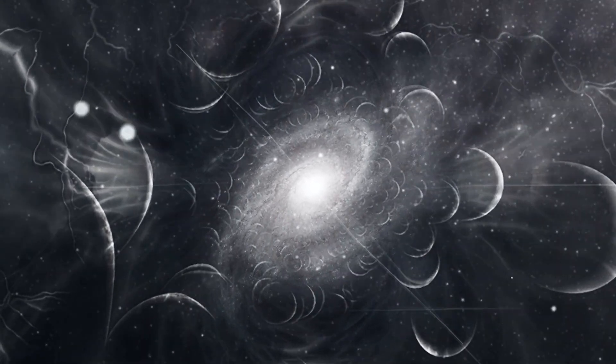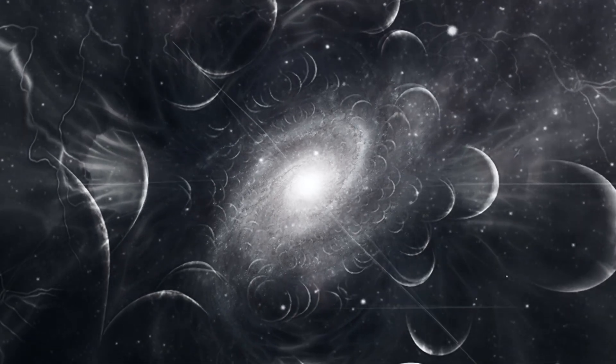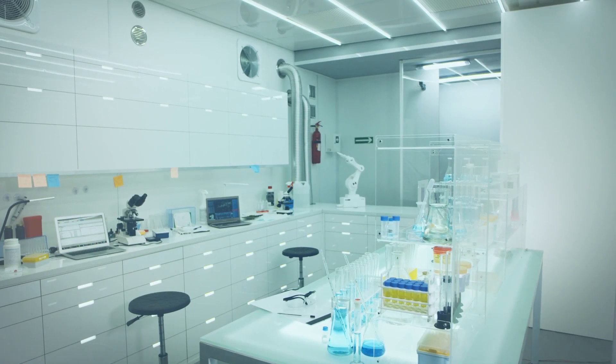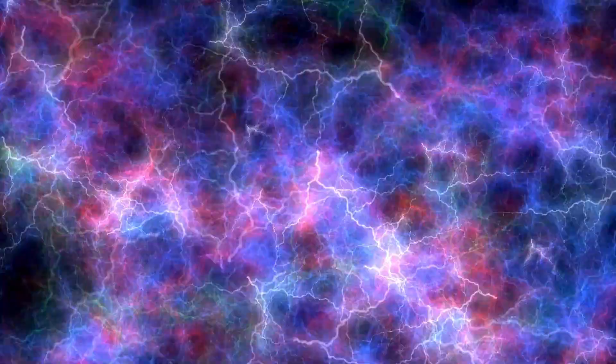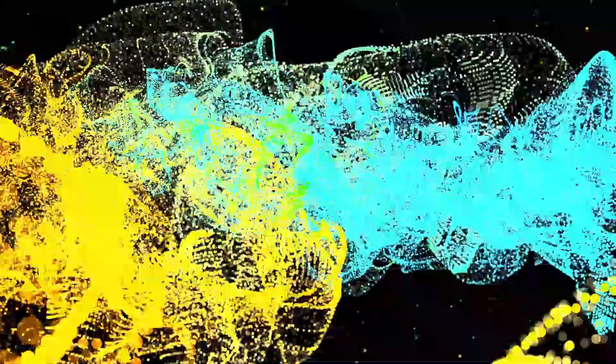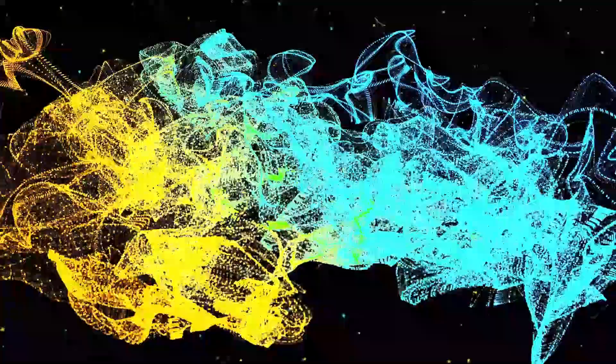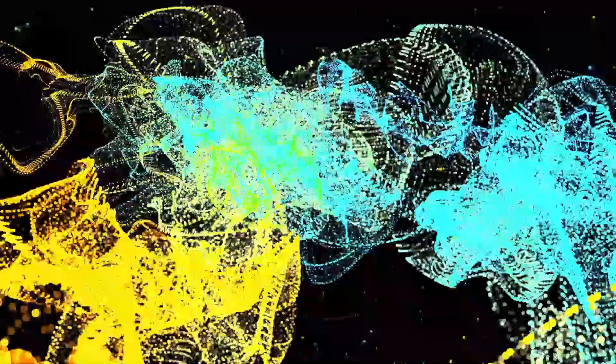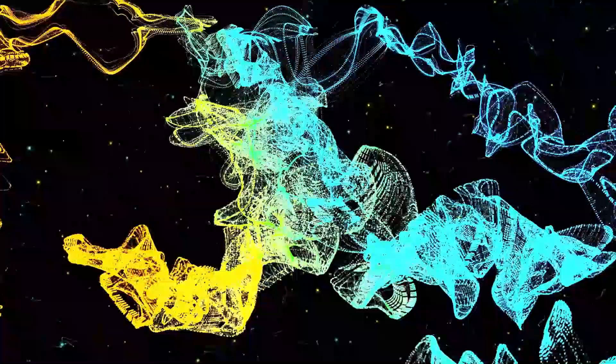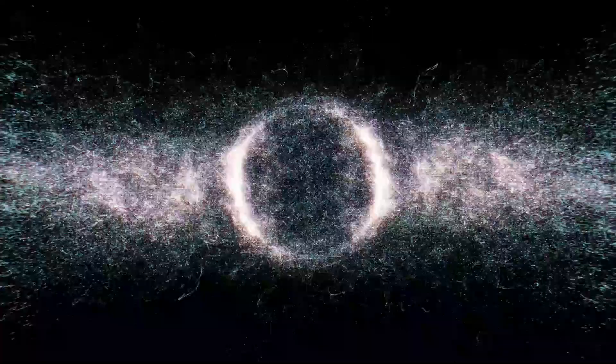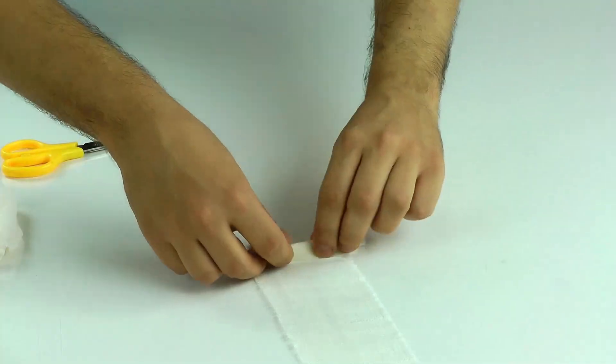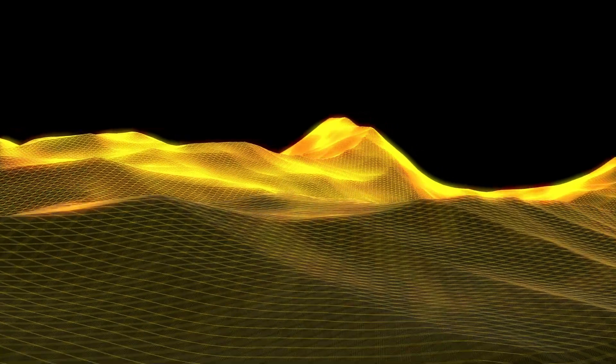String theory introduces the idea of the ekpyrotic universe, a concept derived from the Greek word for conflagration or fire. This theory suggests that the Big Bang was not the beginning, but rather the result of an earlier cosmic event. Building on this idea, scientists have developed a related model called cyclic cosmology. Although the idea of a cyclical universe has existed for millennia, string theory provides it with a firm mathematical foundation. In cyclic cosmology, the universe undergoes endless cycles of expansion and collapse, stretching infinitely into both the past and the future.